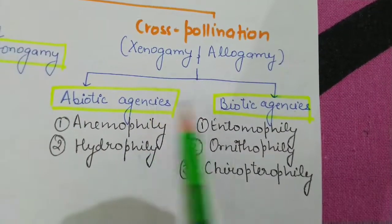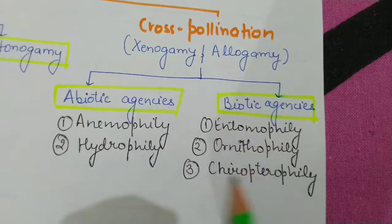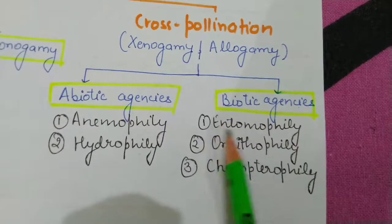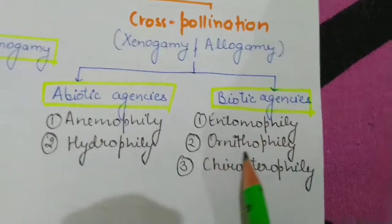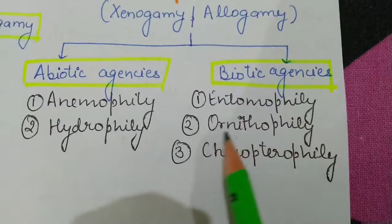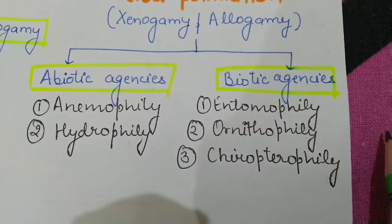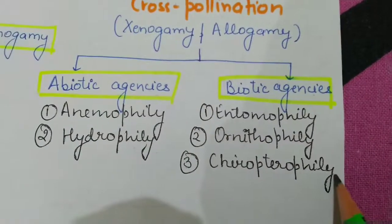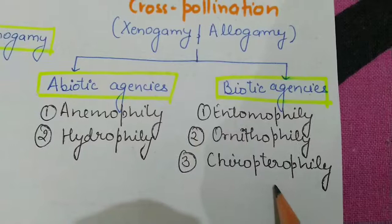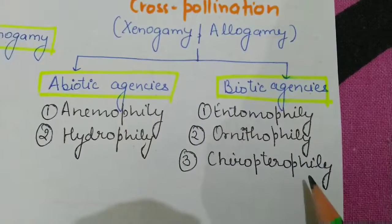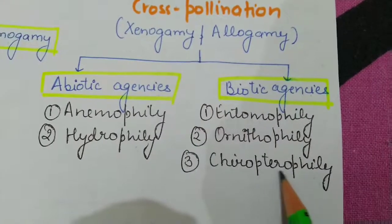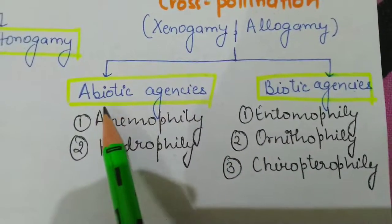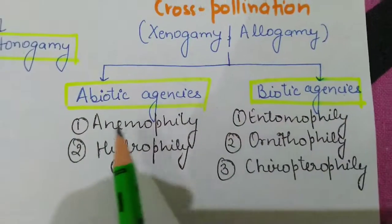Biotic agencies are of three types. Entomophily occurs through insects — insect pollination. Ornithophily occurs through birds — bird pollination. Chiropterophily occurs through bats — bat pollination. These biotic agents are living organisms that facilitate cross pollination.